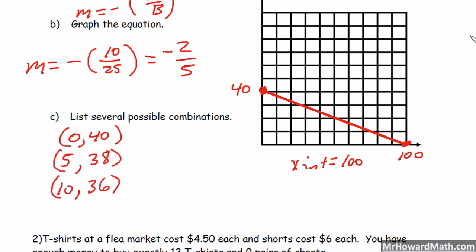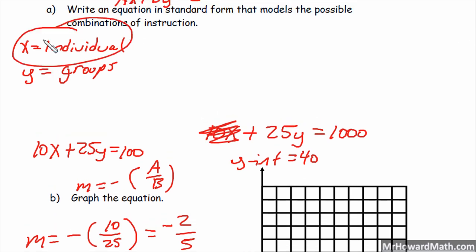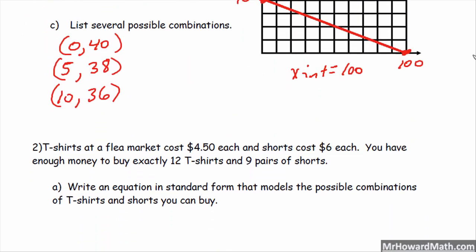And earlier, we said that X was individual lessons and Y was group lessons. So that's what our ordered pairs stand for. So 0 individual 40 group, 5 individual 38 group, 10 individual 36 group would all be combinations. And then we can go ahead and list the X intercept, which would be 100 individual lessons and 0 group lessons. Alright, so that's it for that one.